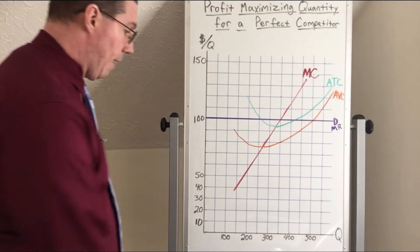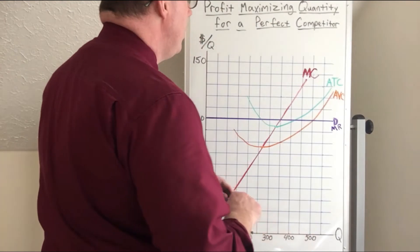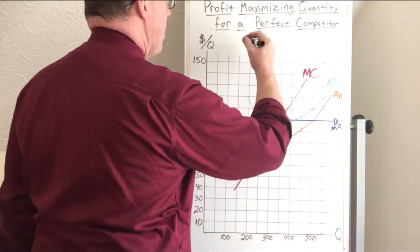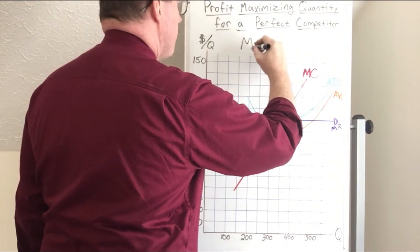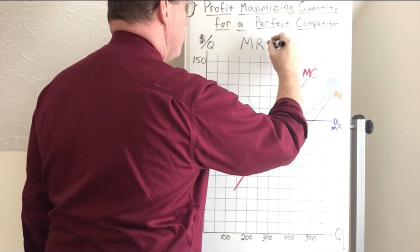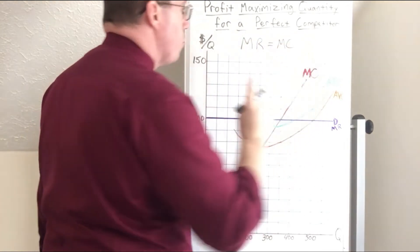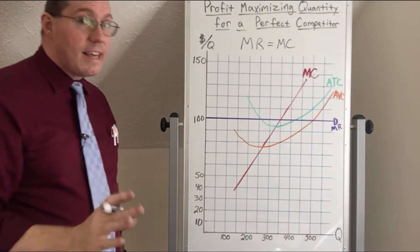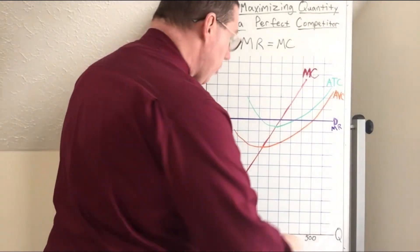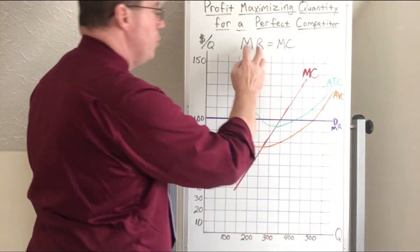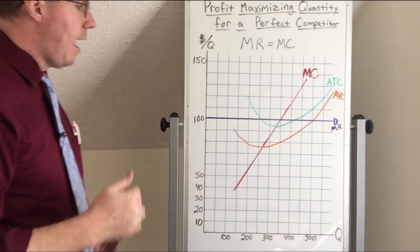Our profit maximizing rule has not changed. We will identify the profit maximizing quantity wherever marginal revenue is equal to marginal cost. We are looking for where the marginal revenue curve intersects with the marginal cost curve.